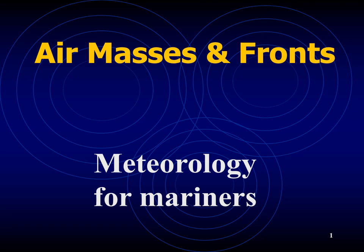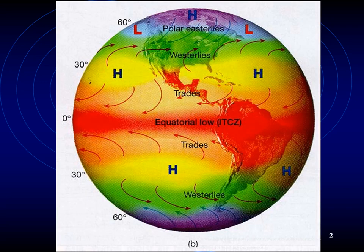Air masses may be defined as a quantity of air with dimensions of about 500 miles or so, with little or no horizontal variation of any of its properties, especially temperature and humidity. It is an extremely large body of air whose properties of temperature and humidity are fairly similar in any horizontal direction at any given altitude. Air masses may cover many thousands of square kilometers.